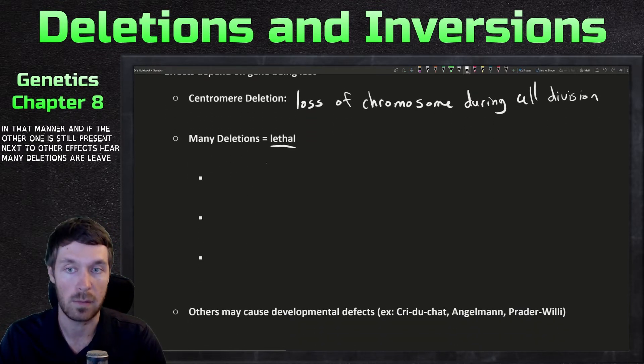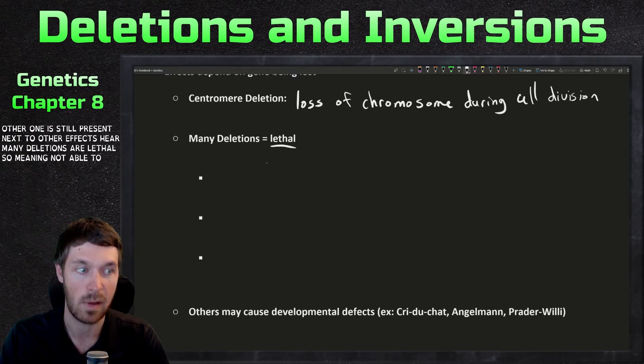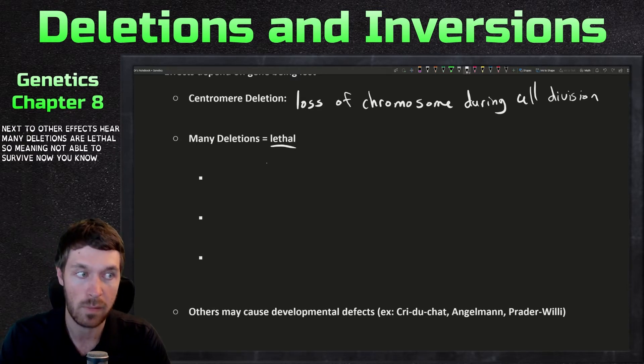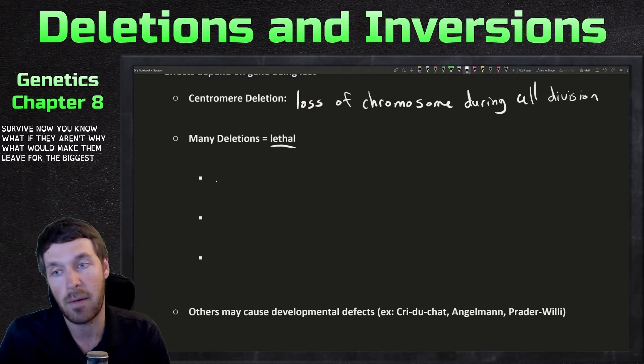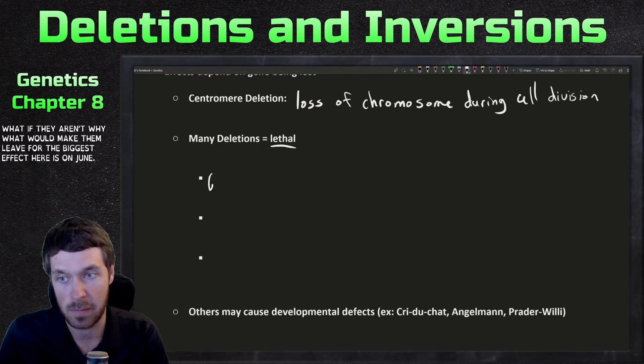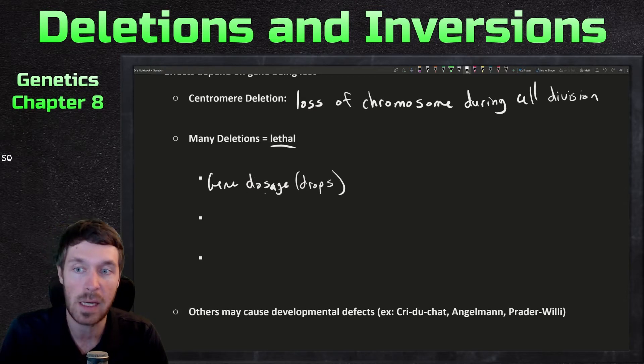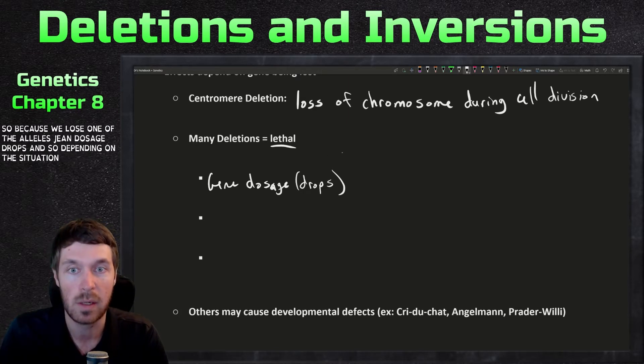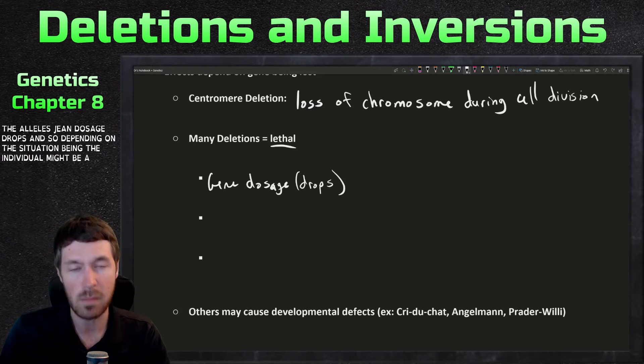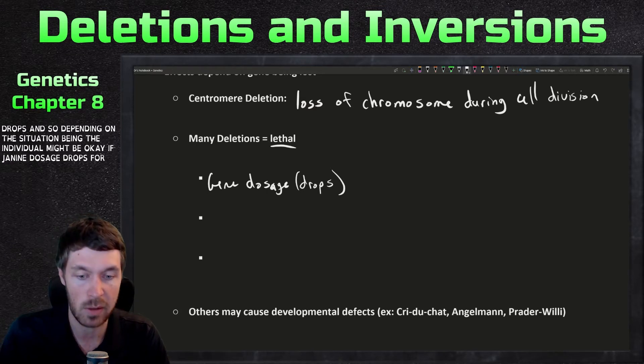And that loss of chromosome during cell division would typically just lead to cell death and apoptosis if it's just one cell. Now, if that's a germline cell that's going to be fertilized, then that would cause severe developmental effects depending on which chromosome might be lost in that manner and if the other one is still present. Next, so other effects here, many deletions are lethal. So meaning not able to survive. What would make them lethal? The biggest effect here is on gene dosage.